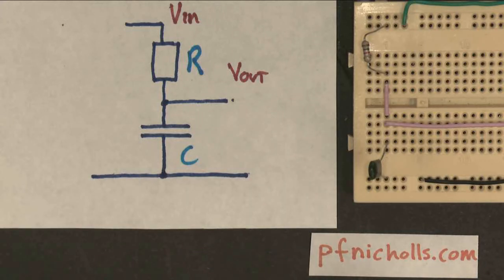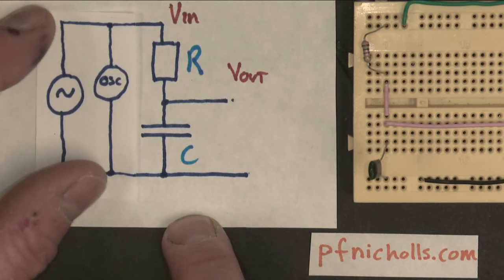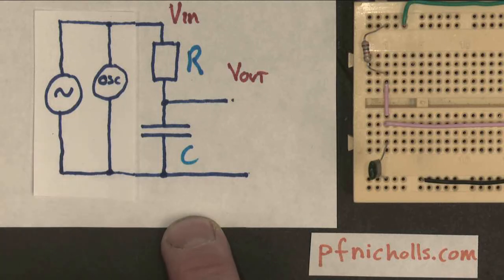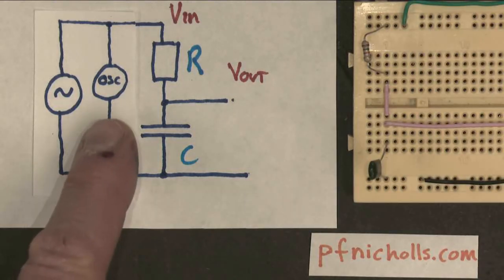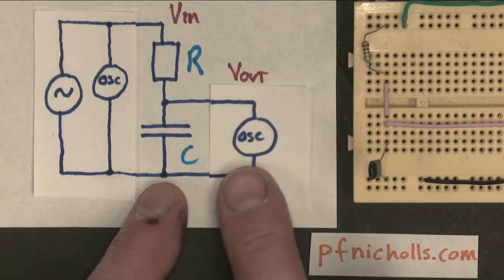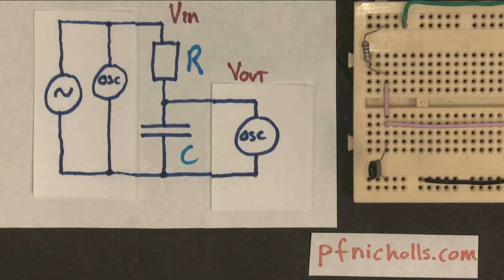But we're going to be doing something slightly different. Instead of using a DC supply and a voltmeter, we're going to be using a signal generator, which is attached to my green wire. And we're going to be using an oscilloscope to measure the input voltage, and a second oscilloscope to measure the output voltage. We're going to see what it does and see if we can understand the mathematics behind it.